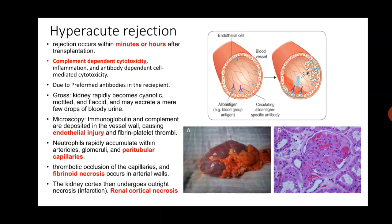Thrombotic occlusion of these capillaries leads to ischemia and fibrinoid necrosis of the arterial wall. The entire cortex of the kidney can undergo necrosis, known as renal cortical necrosis. In summary, the characteristic features of hyperacute rejection are: complement-dependent cytotoxicity, endothelial injury, peritubular capillary inflammation, fibrinoid necrosis of the arterial wall, and renal cortical necrosis — all occurring within minutes to hours.